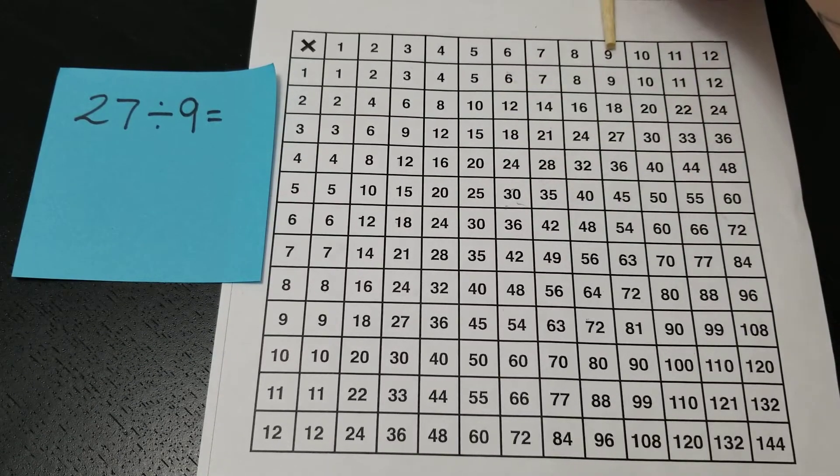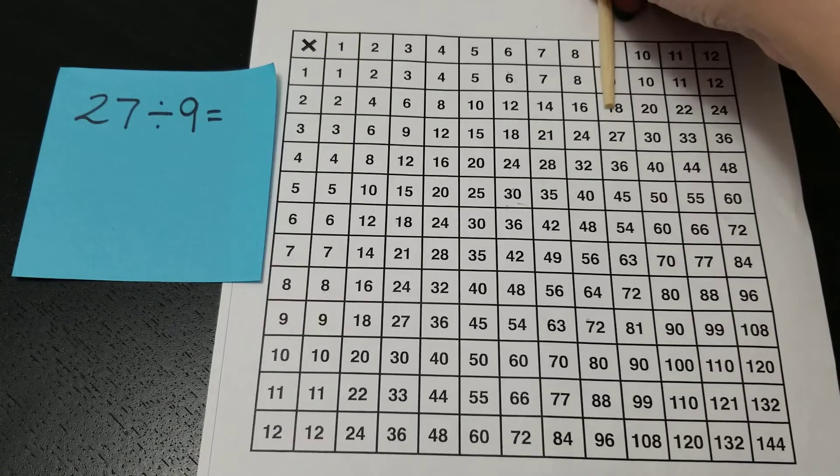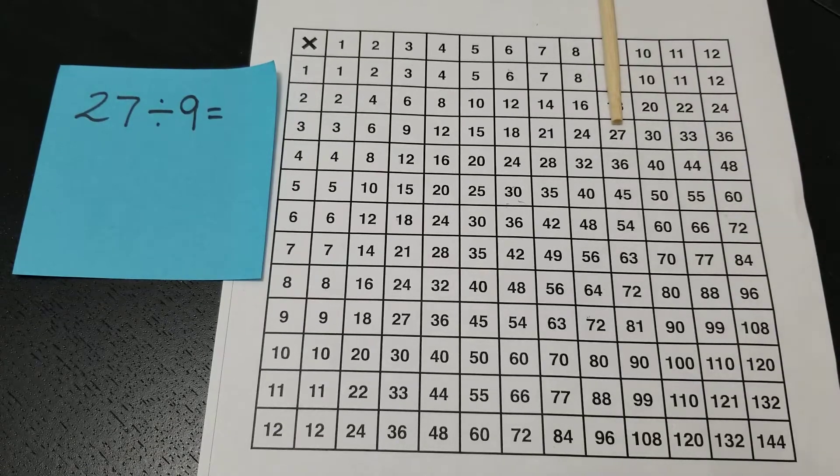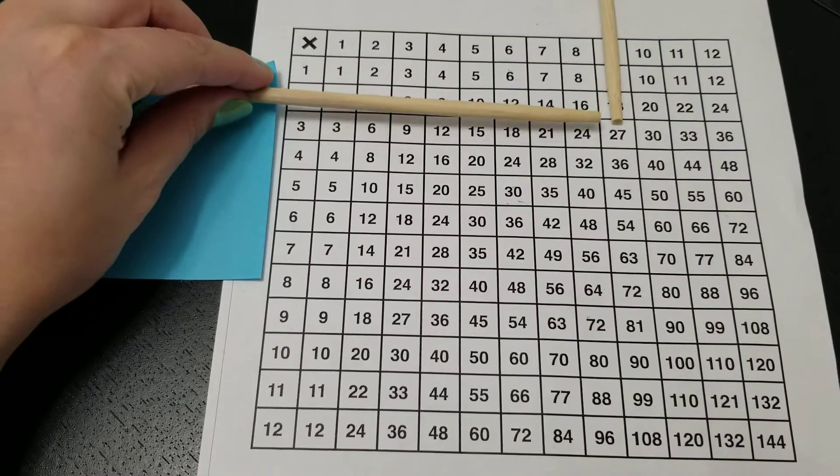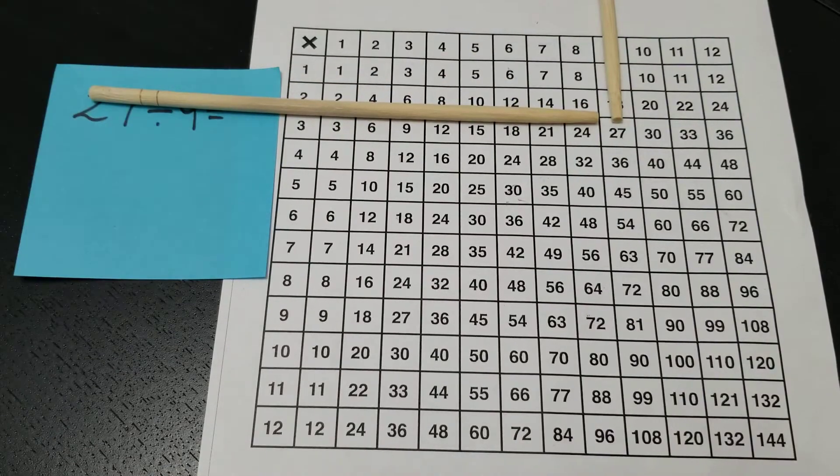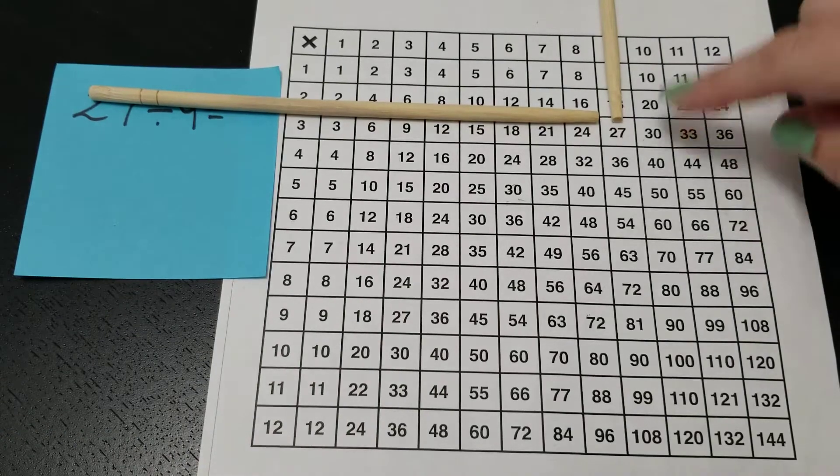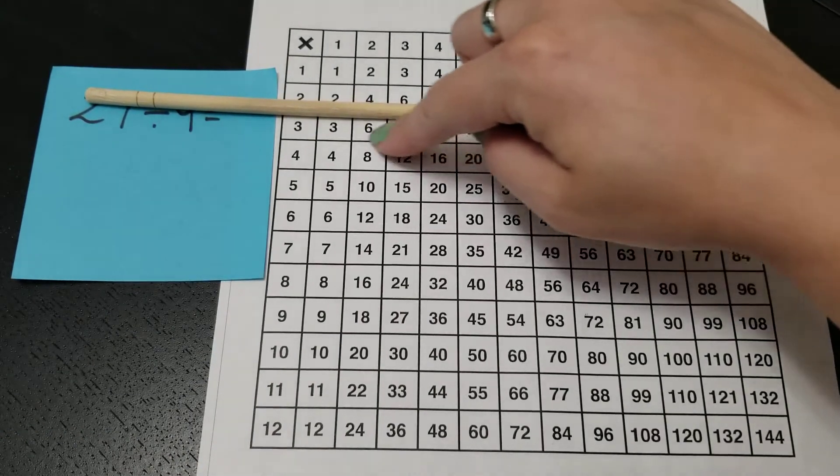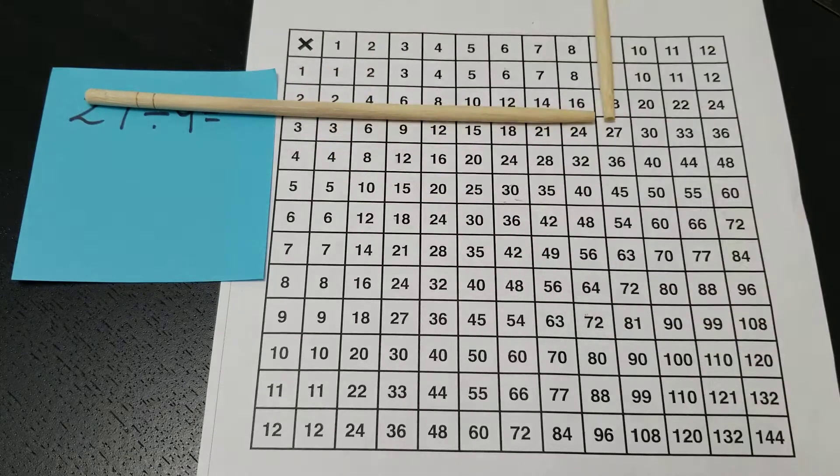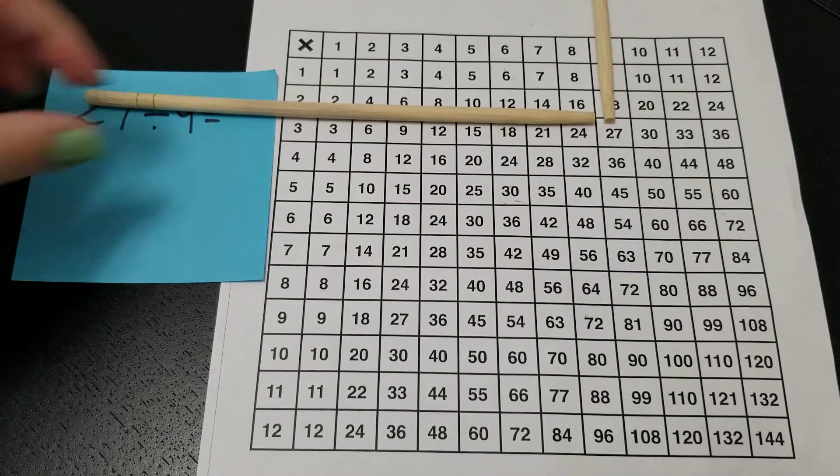27 divided by 9. So I'm going to go down the 9 until I find 27. I found it. There it is. Then I'm going to lay it straight across because I need to find the row that matches it. So I've currently found 27 divided by 9 and I'm going to go straight over until I find the other one is 3. 27 divided by 9 makes 3.